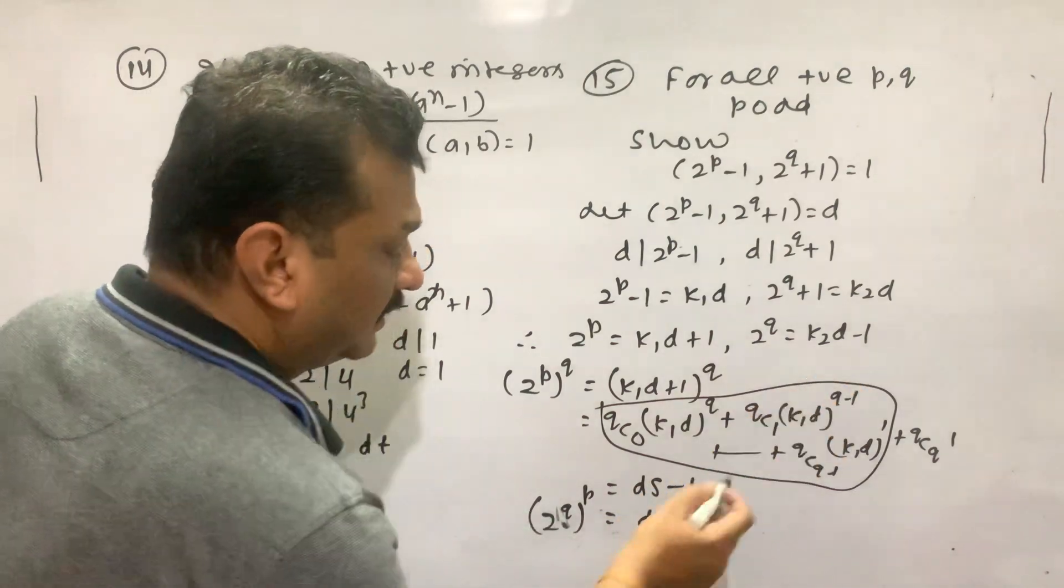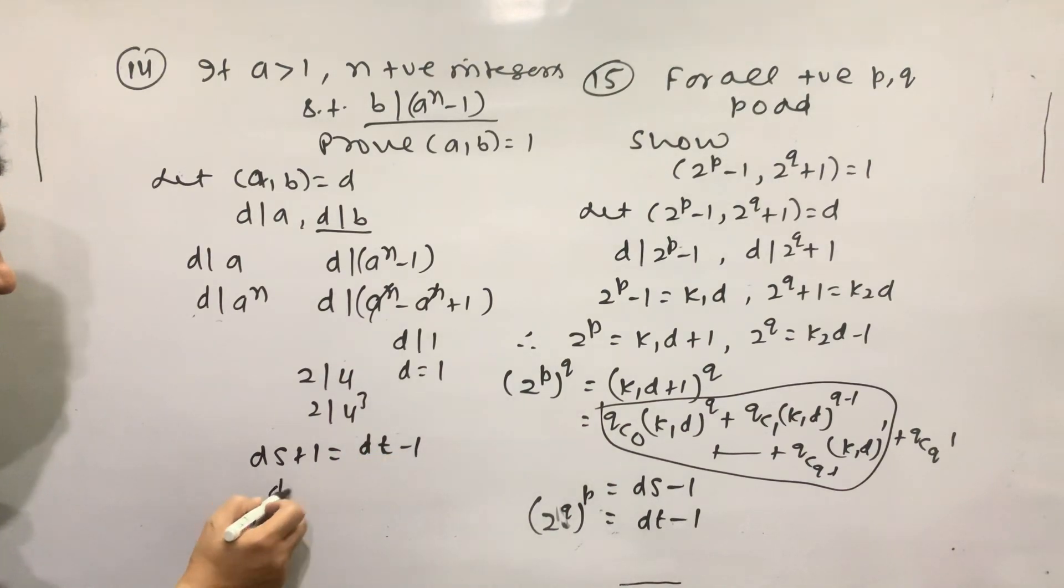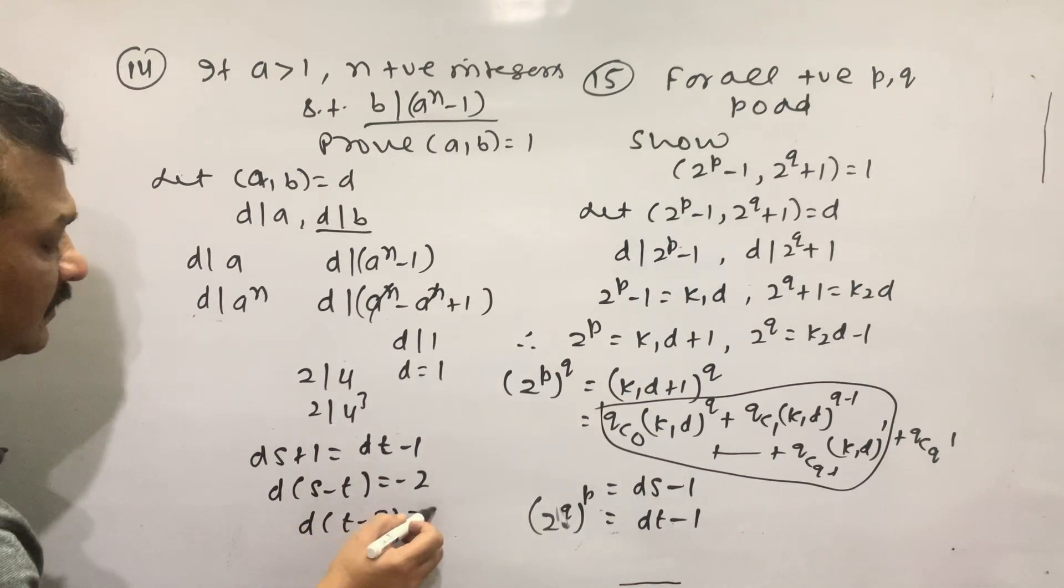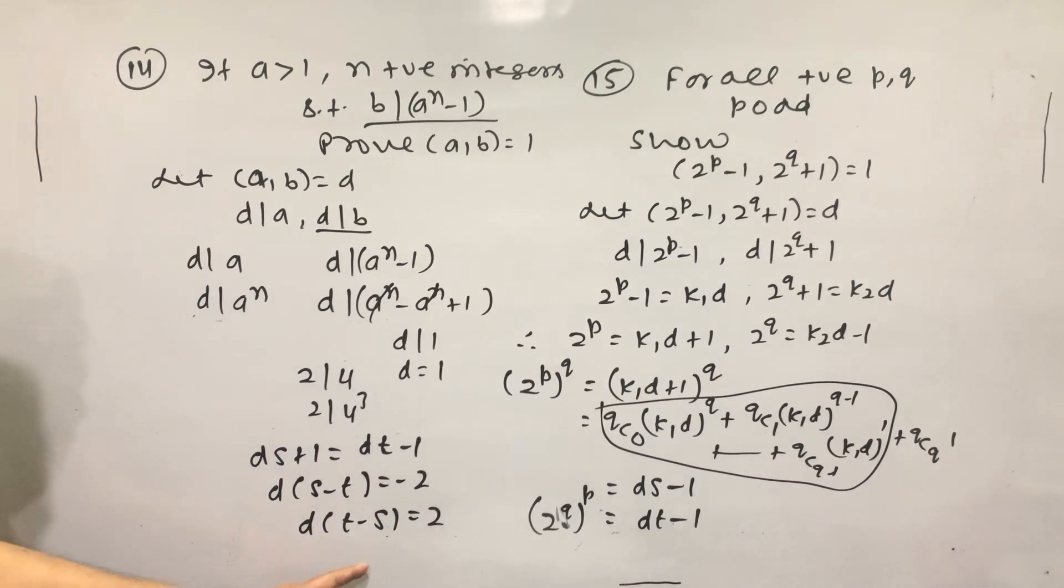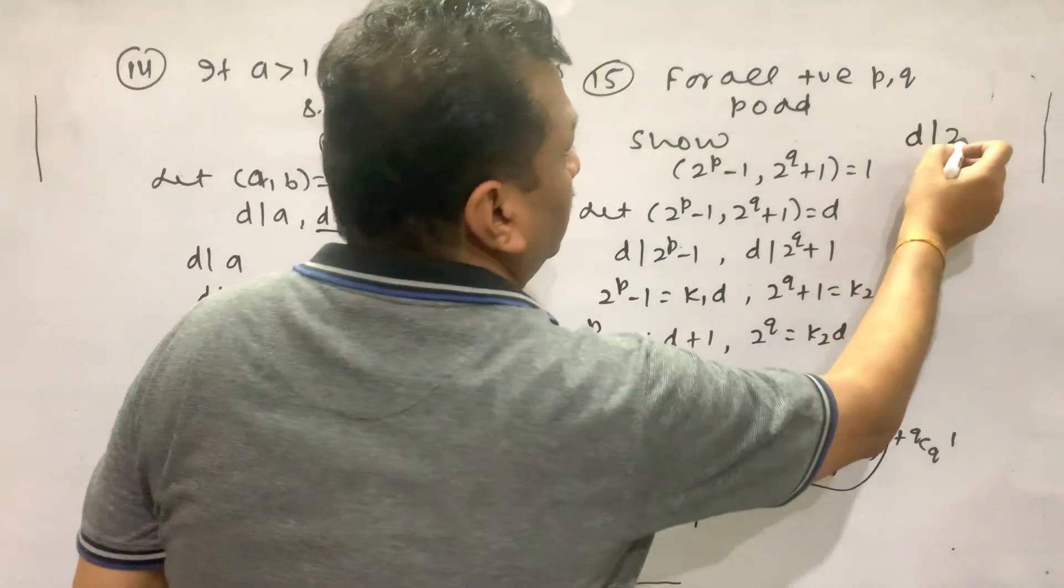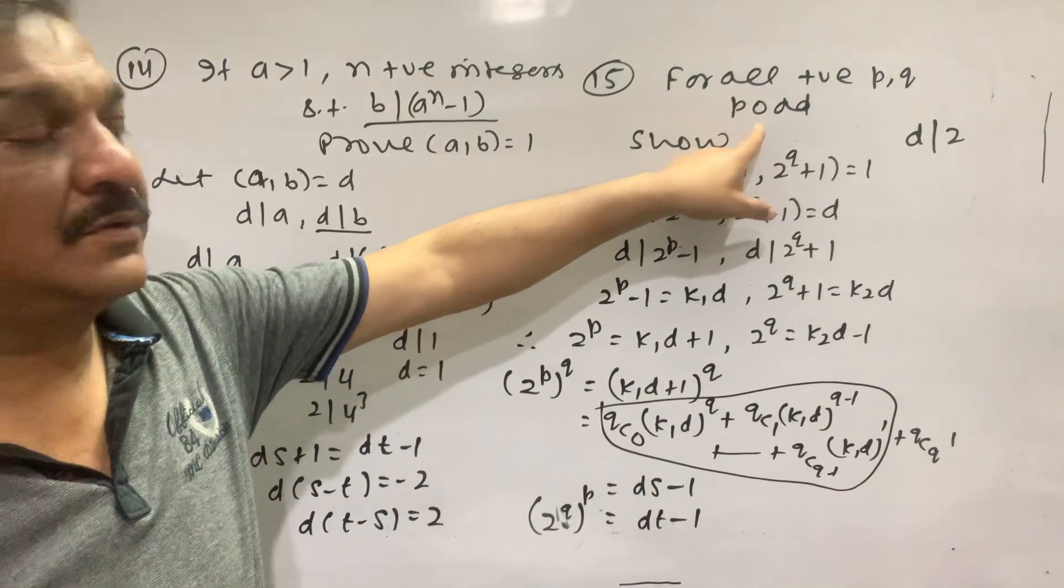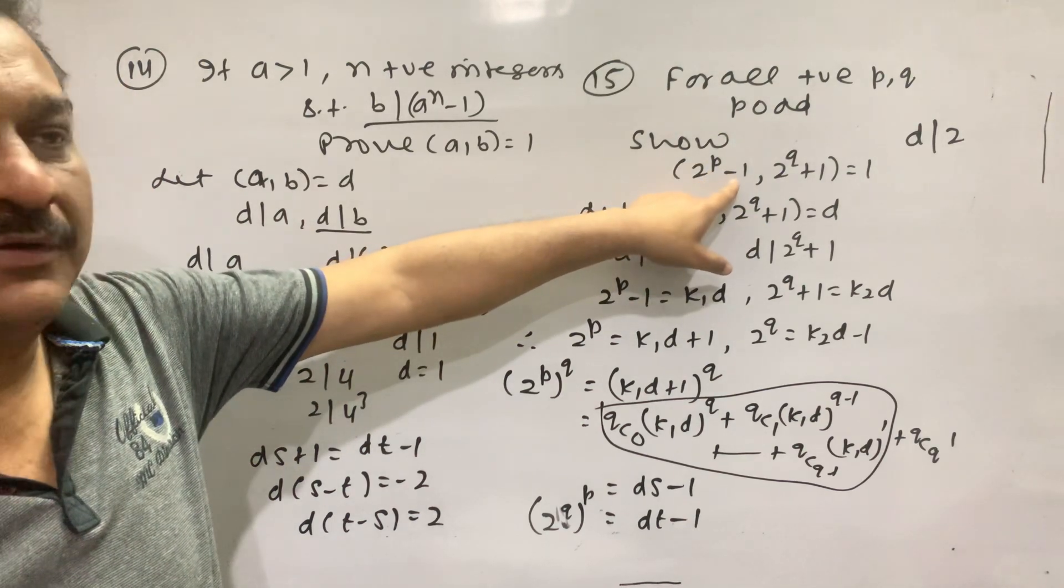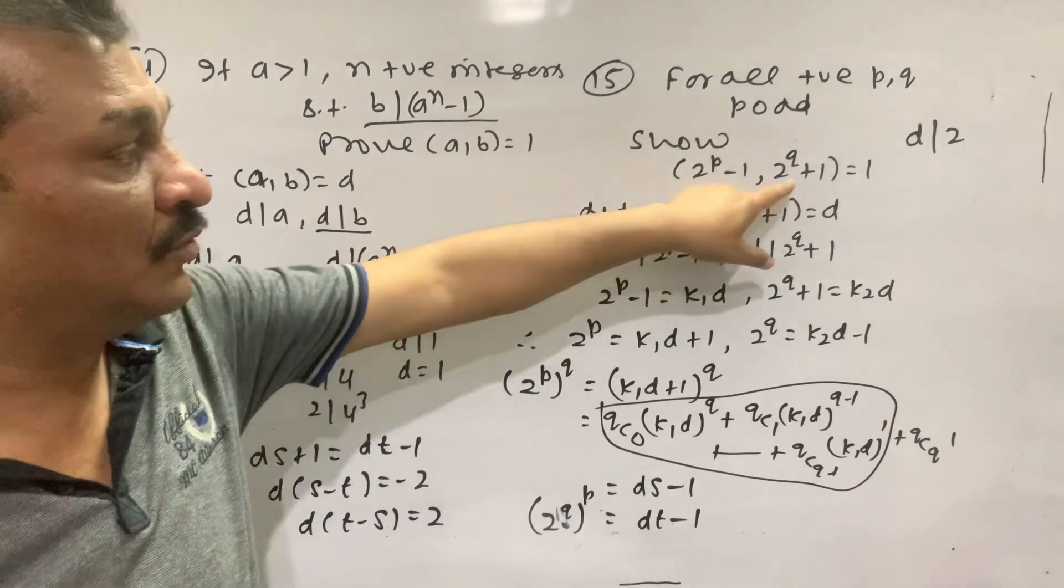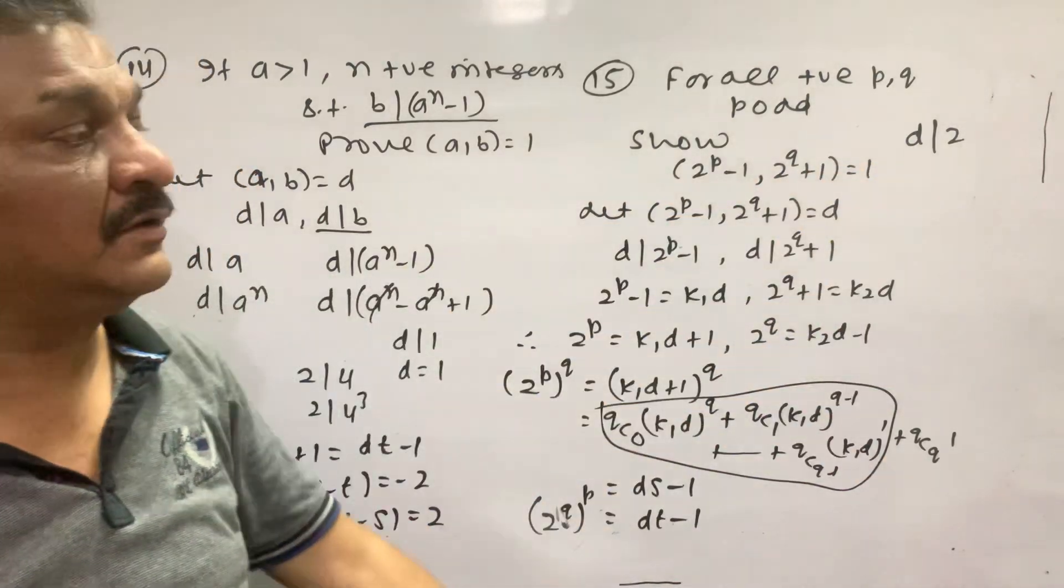So I have d to the t minus 1. d to the s minus t equal to minus 2. d to the t minus s equal to 1. So from this, d divides? So what is the power p? What is the power p? When p is the power p, then what is p-1? And then 2 plus q of 1 would be the power p. So what is d value in the power p? What is the power p? Then d divides 1 or 2.